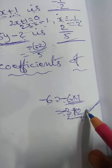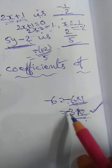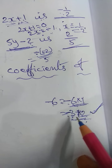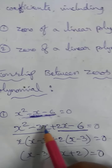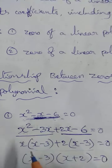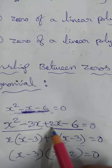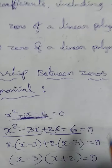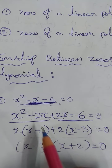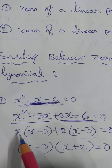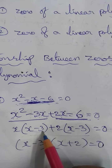Applying this: -3 + 2 gives minus 1, which matches. So we split the middle term as -3x + 2x. This gives us x² - 3x + 2x - 6 = 0.